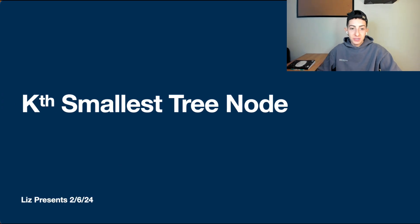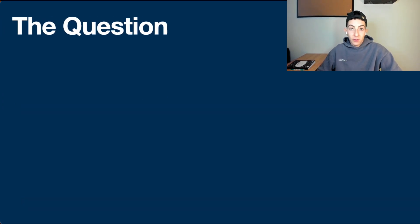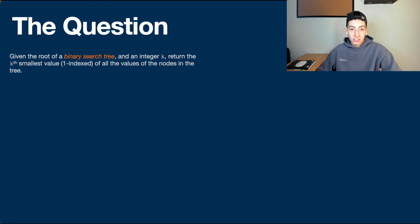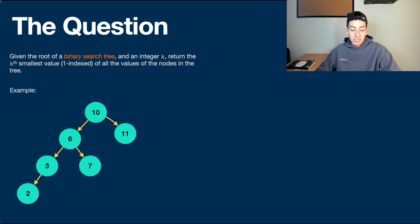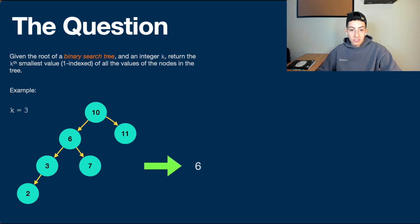This week's problem is called the kth smallest tree node. Given the root of a binary search tree and an integer k, return the kth smallest value — one-indexed — of all the values of the nodes in the tree. Here is an example: we have a binary search tree and we are looking for the kth smallest number. With k equal to 3, counting in ascending order, the answer is 6 because 2 is the smallest, 3 is the second smallest, and 6 is the third smallest.